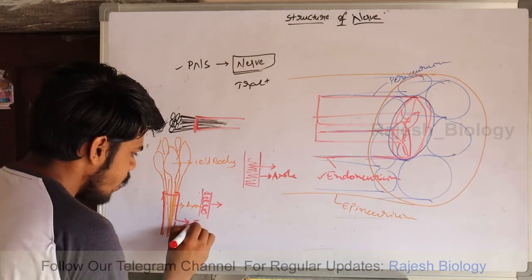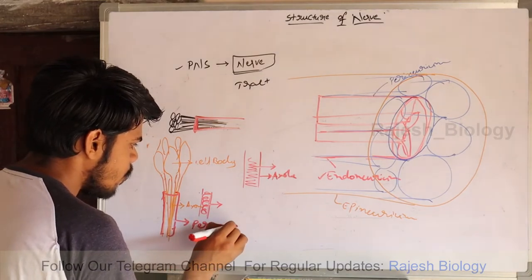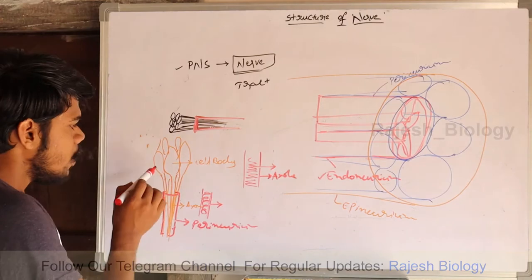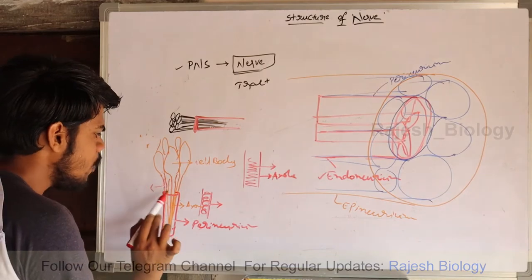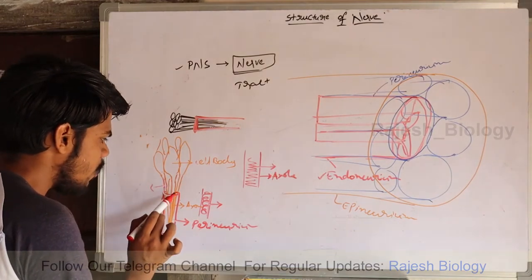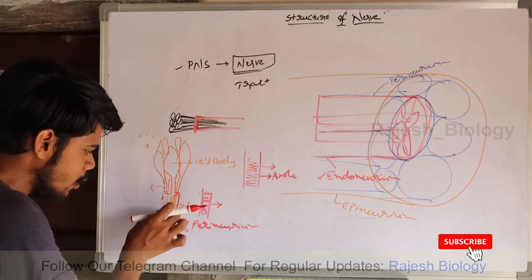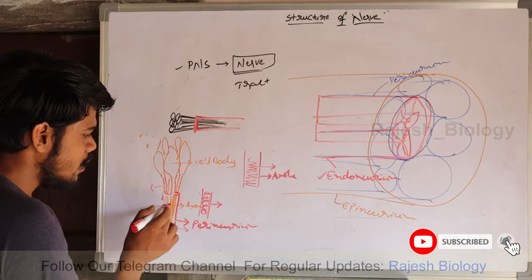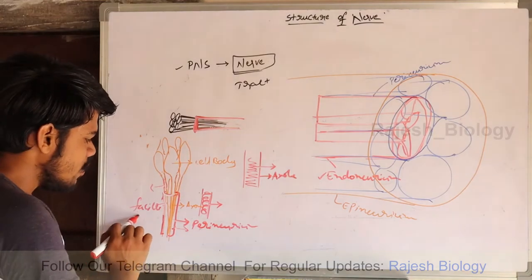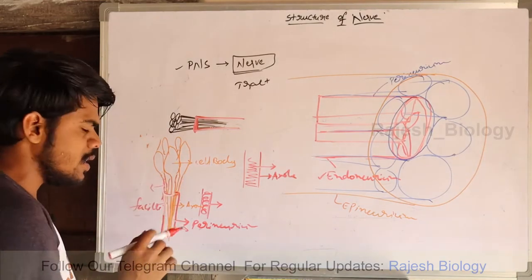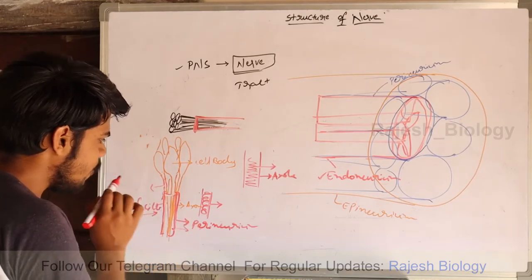The covering around each fiber is perineurium. Each flower or fiber is a neuron, and a bundle of fibers wrapped around by a covering is known as perineurium. This bundle is known as a fascicle. A bundle of neurons or bundle of fibers is known as a fascicle.